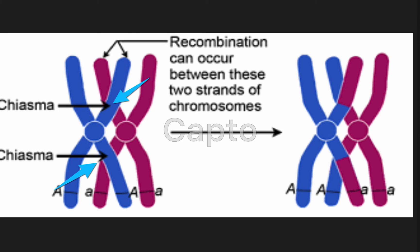In humans, there seems to be one chiasma per chromosome arm, meaning that the DNA is exposed and exchanged only at that site — a minimum of once and rarely more than three times. Through this, we can see how important chiasmata are to bivalents, and how information from both the paternal and maternal chromatids is exchanged, allowing a recombination of paternal and maternal genes to be passed down to the new cell, or progeny.